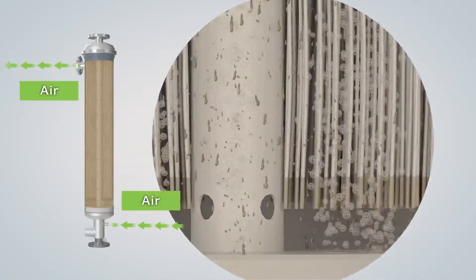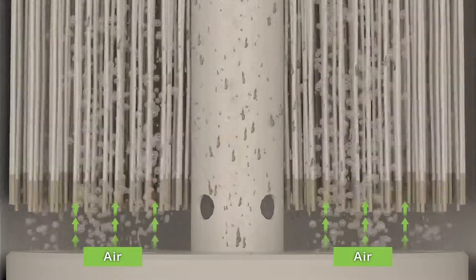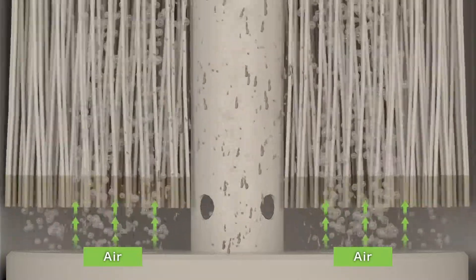The detached particles are removed from the surface of the hollow fiber membrane by a bubbling action from the bottom of the module.